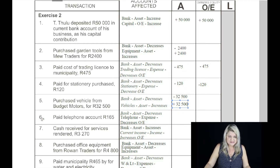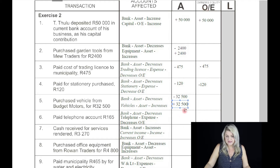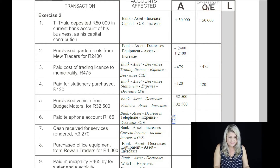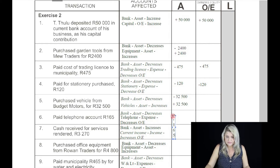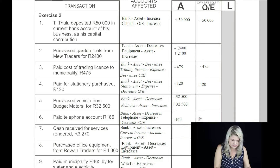Transaction number six: pay telephone account, 165 Rand. The bank is an asset — it decreases once again. Telephone is an expense. What do we say about an expense? It always decreases owner's equity. So the bank was decreased by 165 Rand, and owner's equity was also decreased by 165 Rand.